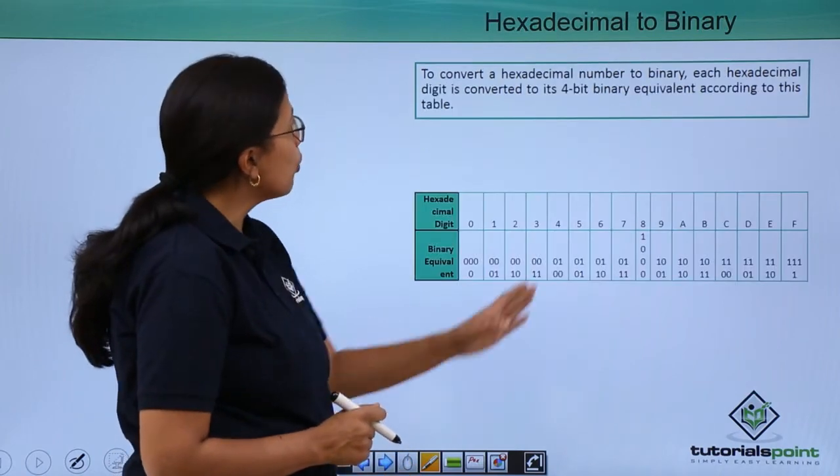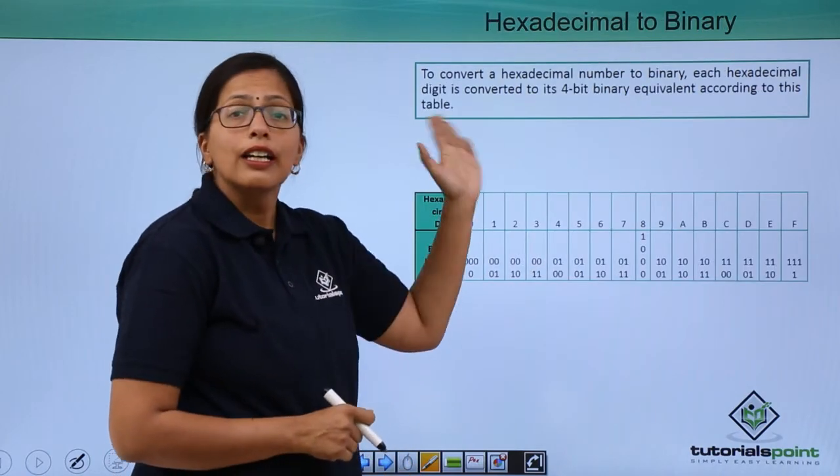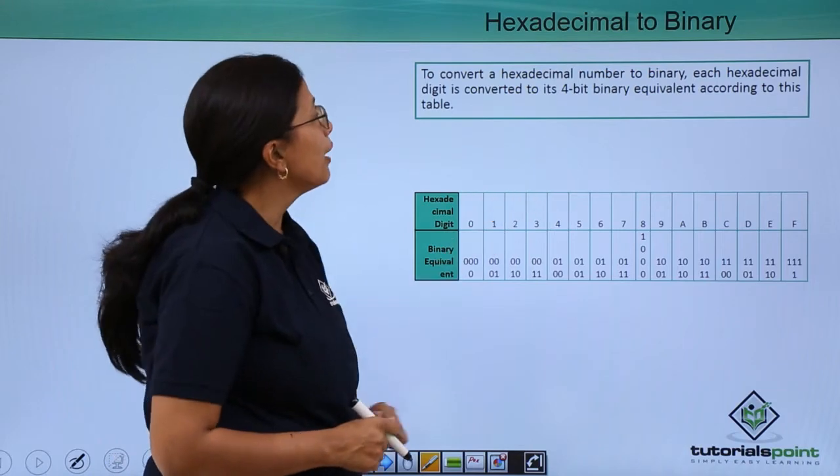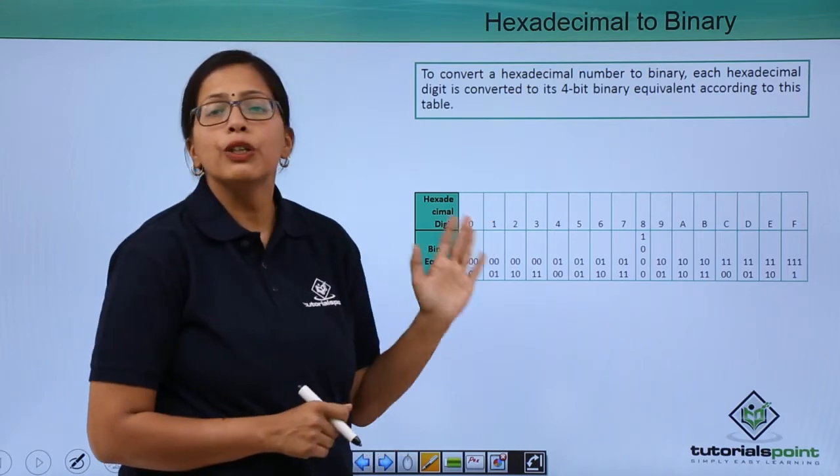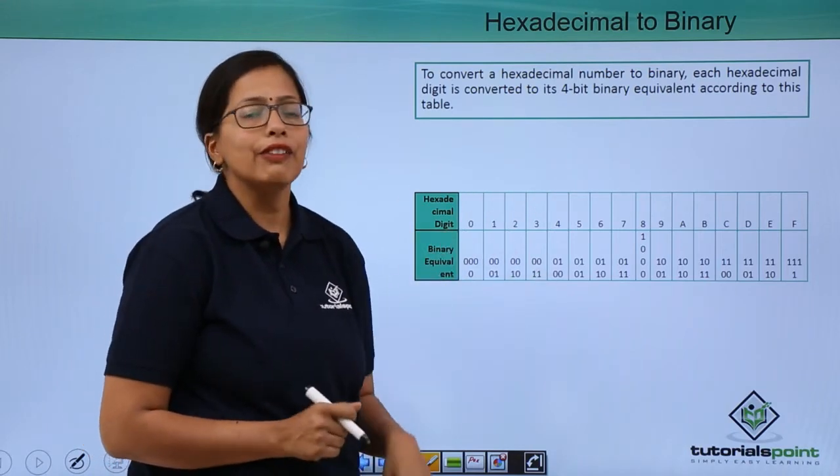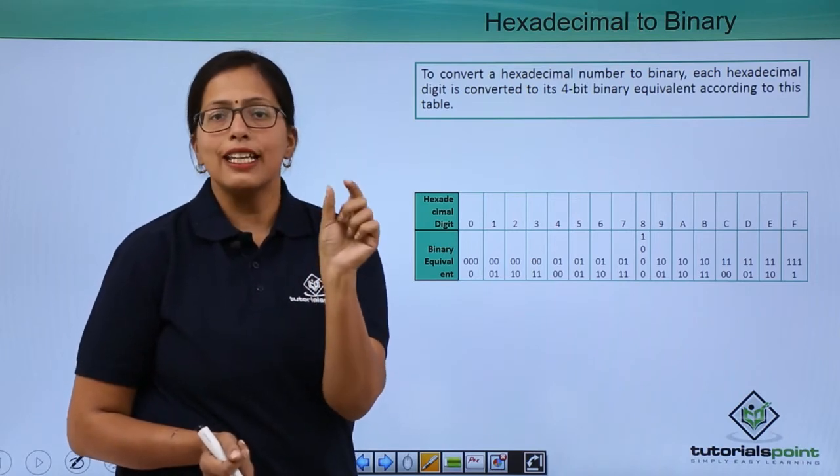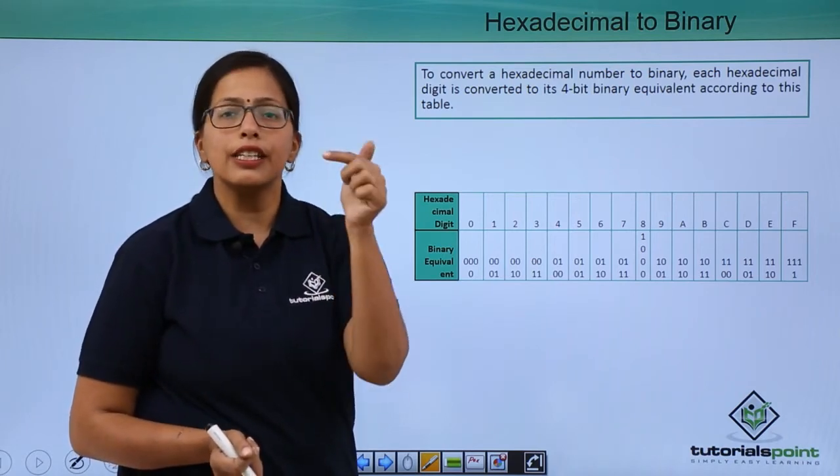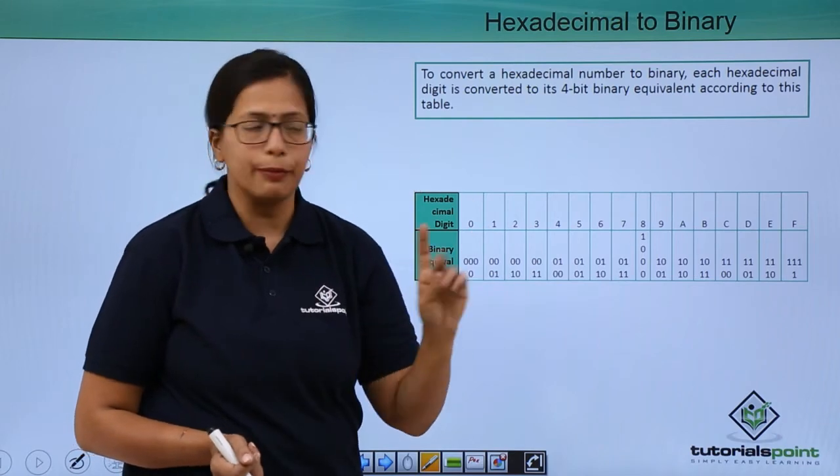Now, let's see how we can do the other way round. Hexadecimal to binary. Again, like we were doing for octal to binary, I will convert each digit, each hexadecimal digit into its equivalent binary, 4-bit binary.